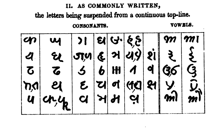Kaithi script was added to the Unicode standard in October 2009 with the release of version 5.2. The Unicode block for Kaithi is U+11080–U+110CF.